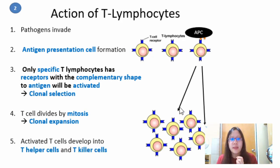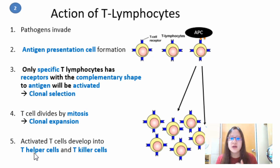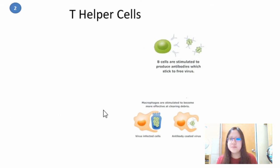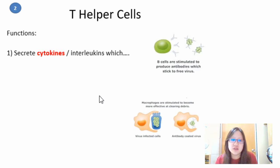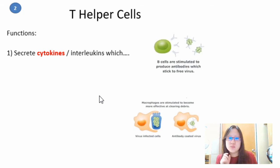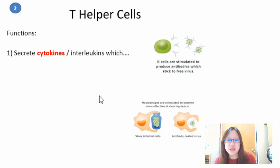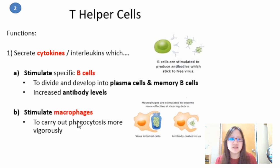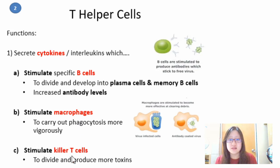After clonal expansion, the T cells can develop into two types: T helper cells or T killer cells. T helper cells have one major function: to secrete cytokines, which are small hormone-like molecules also called interleukins. They generally do three things: stimulate B cells, stimulate macrophages, and stimulate killer T cells.